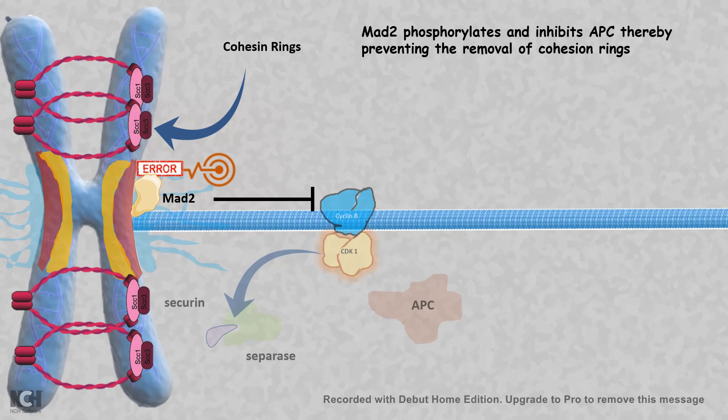This situation would give the cell some more time to rectify itself and prevent chromosomal aberrations. This is also known as spindle assembly checkpoint.